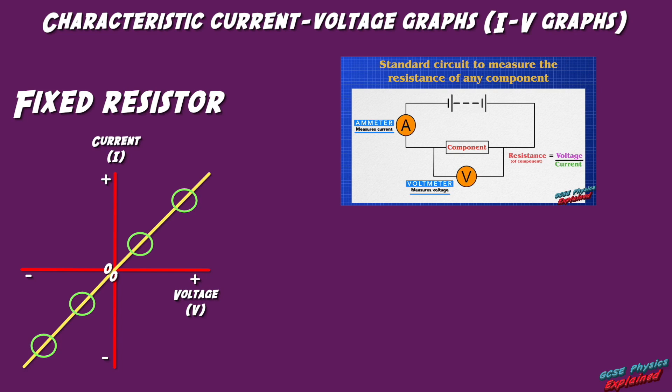Now not all fixed resistors have the same size resistance. Some fixed resistors have a small resistance, which means they have a steep constant slope. Remember the steeper the slope, the smaller the resistance.